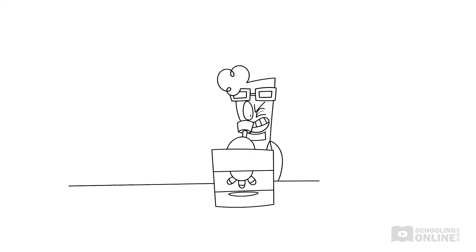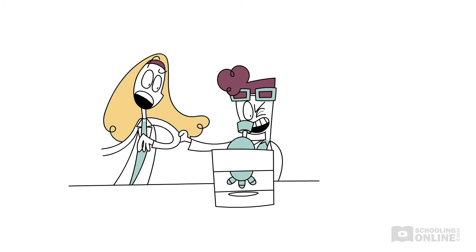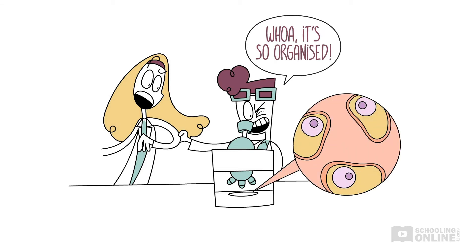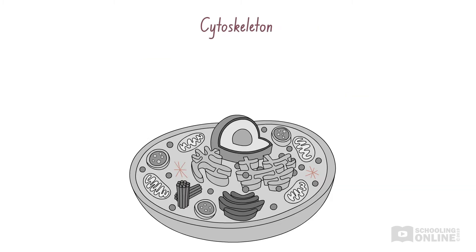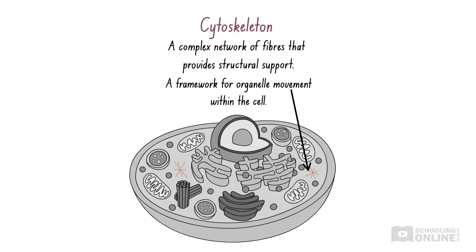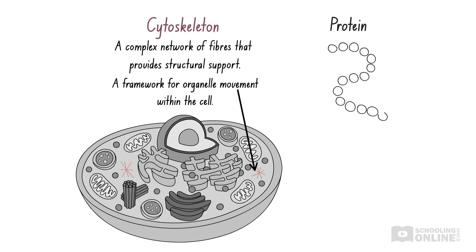If you peek through a microscope, you'll probably notice that animal cells are highly structured. How do the organelles remain organised? The answer lies with the cytoskeleton — a complex network of fibres that supports the interior of an animal cell and keeps the organelles organised. It also provides a framework for the movement of organelles around the cytoplasm, as most organelles are attached to the cytoskeleton. The cytoskeleton is like the human skeleton, which gives the body shape, organises internal components like organs, and anchors moving body parts. The fibres of the cytoskeleton are made of proteins, which comprise long chains of amino acids.